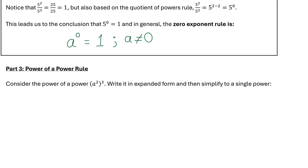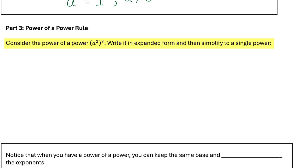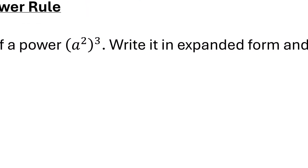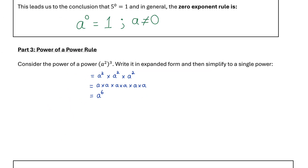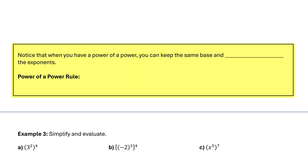The last rule in this lesson is the power of a power rule. Consider a squared to the power of 3. That means three factors of a squared being multiplied together, and a squared is two factors of a. So in total I have six factors of a being multiplied together, which I can write as a to the power of 6. Notice: we kept the base of a and multiplied the exponents, 2 times 3 equals 6. The general rule is: a to the power of m raised to the power of n equals a to the power of m times n.